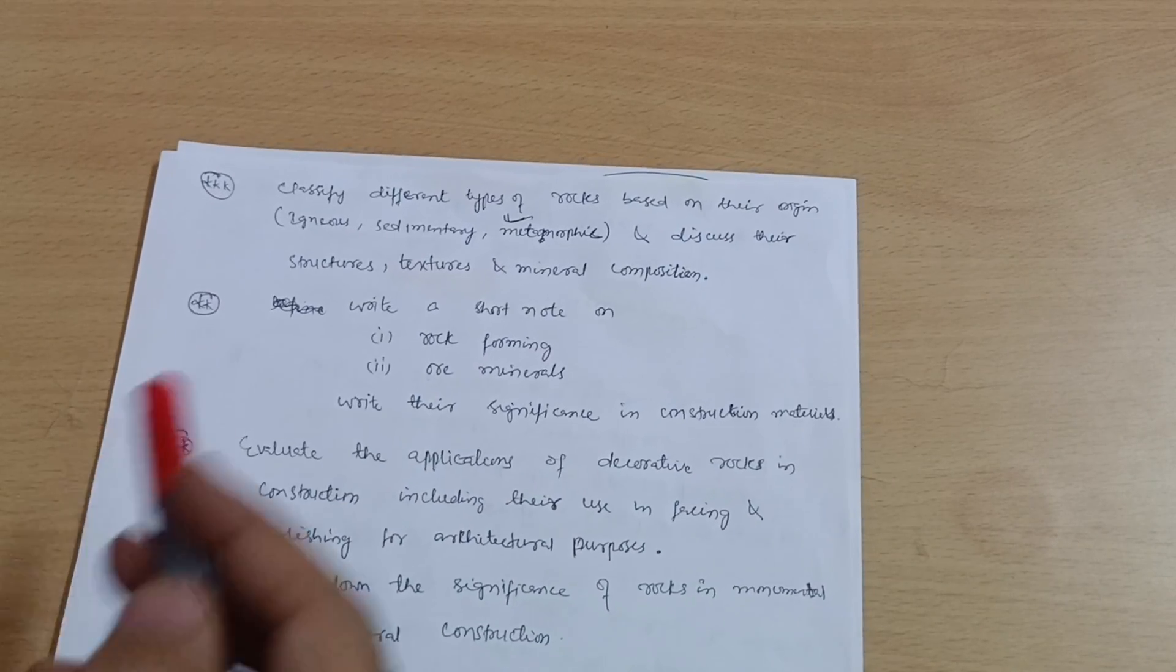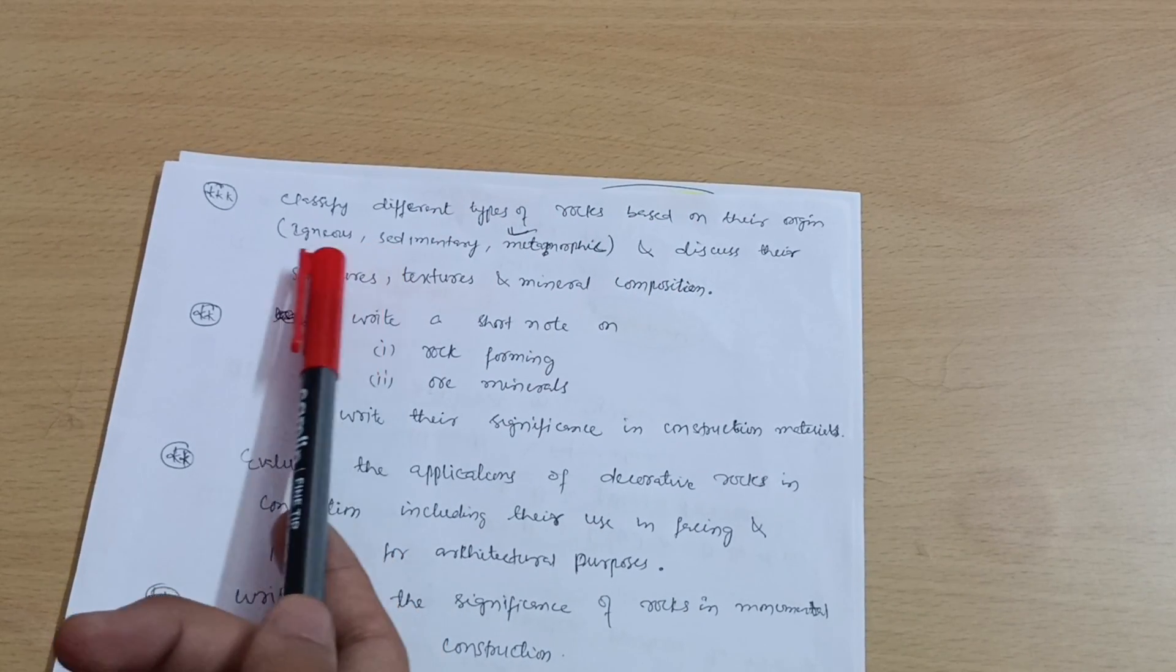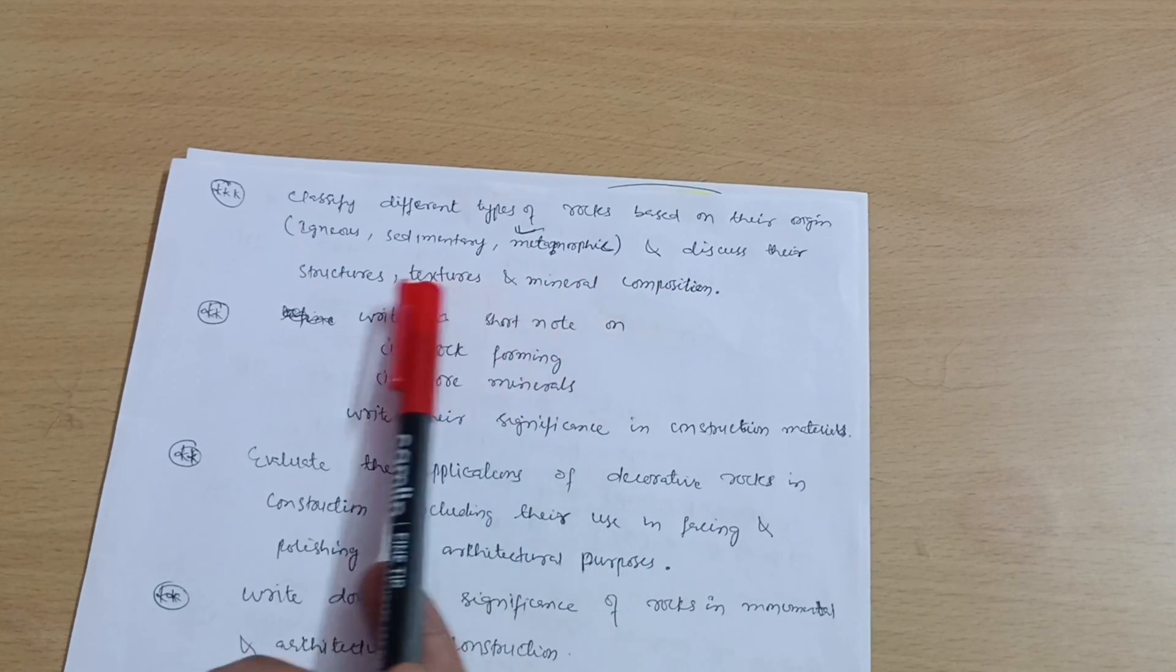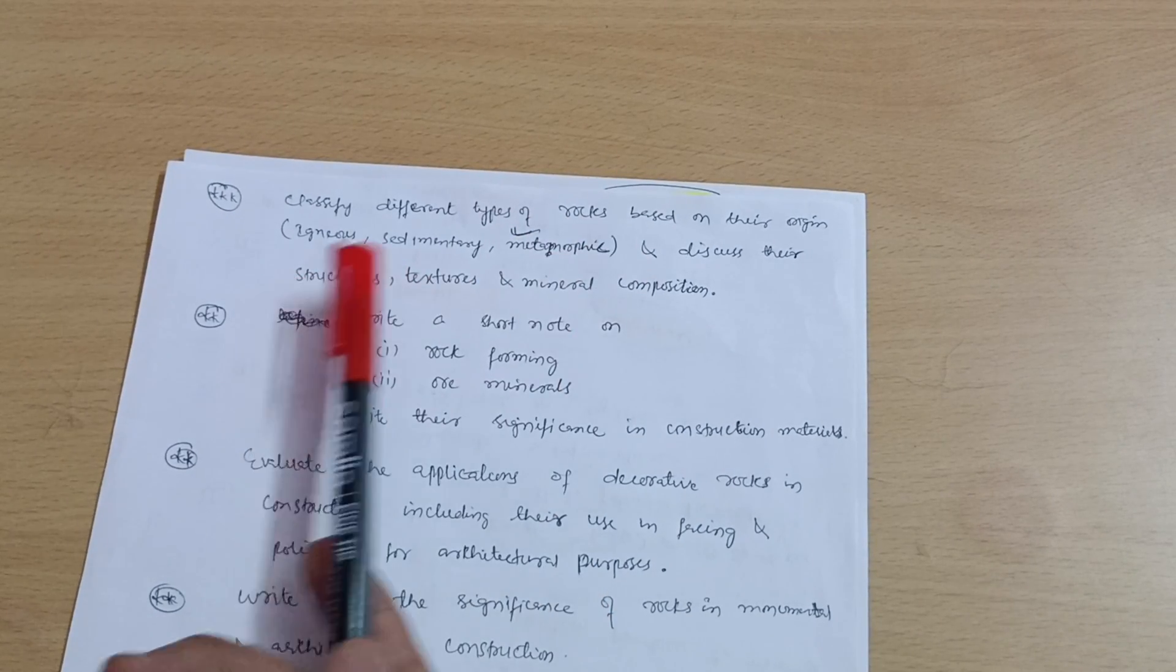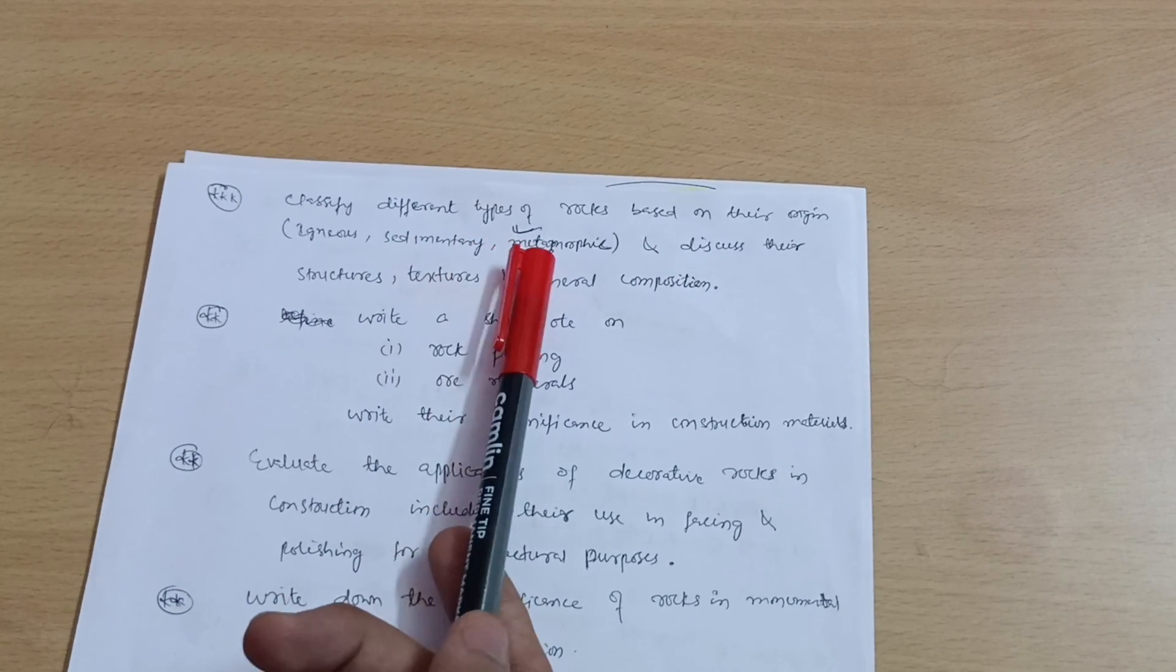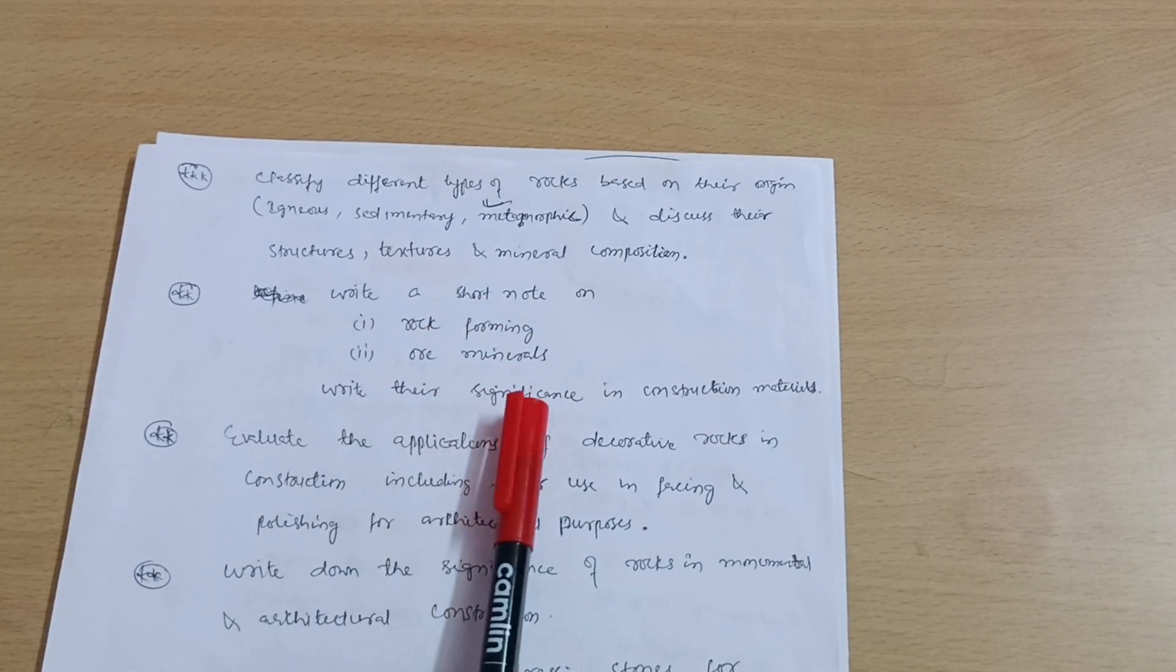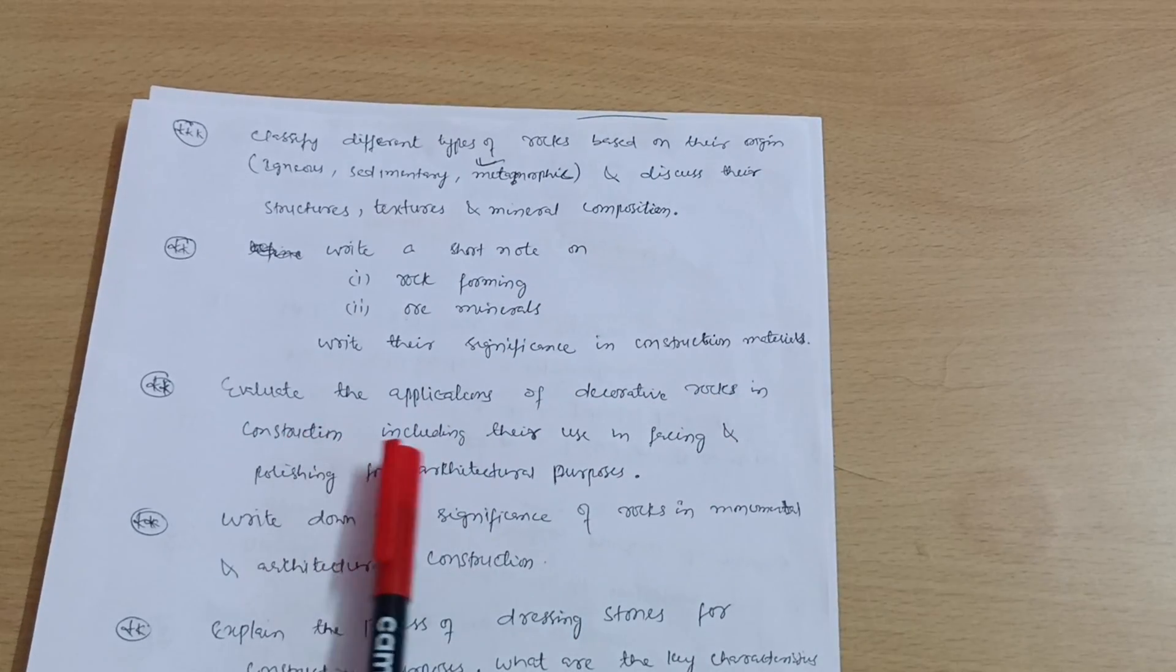Analyze the physical properties and composition of minerals in determining the suitability of minerals. Next, classify different types of rocks based on their origin - igneous, sedimentary, metamorphic - and discuss their structures, textures, and mineral composition. Questions will be like discuss the structure, texture, and mineral composition of metamorphic rock. Sometimes it's sedimentary, but most frequently asked question is on metamorphic rock.